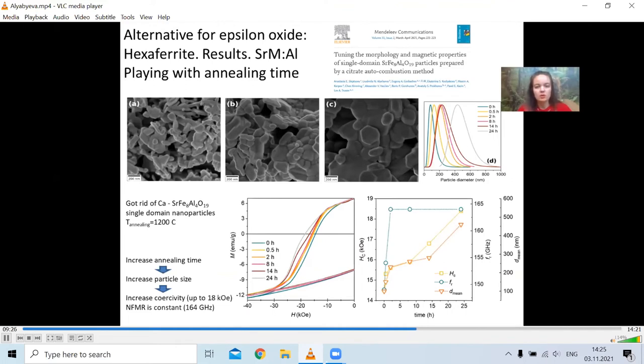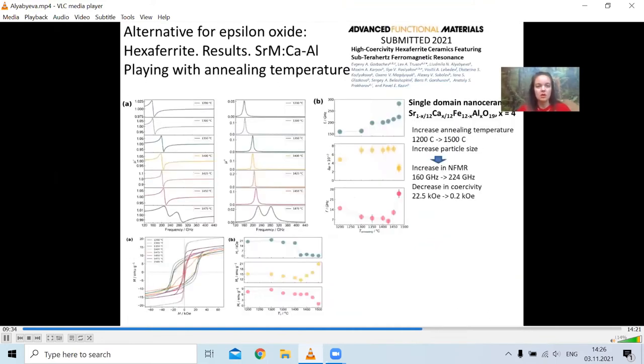So we were able to increase it up to 146 GHz for the used composition. Then we thought, okay, we varied annealing time, what if we vary annealing temperature. And we chose, again, the single-domain nanoceramic composition of x equals 4. And with variation of annealing temperature, we were able even to tune better the frequency of the natural ferromagnetic resonance. And this variation of the time allows us to increase it from 160 GHz to 224 GHz.